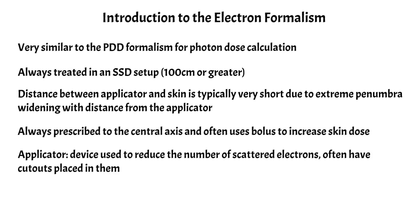The applicator is just a device used to reduce the number of scattered electrons, and they often have cutouts placed in them. So a cutout is basically the electron equivalent of a blocked field. You'll place it into the applicator, and that's what you'll use to define some of your dose calculation parameters.